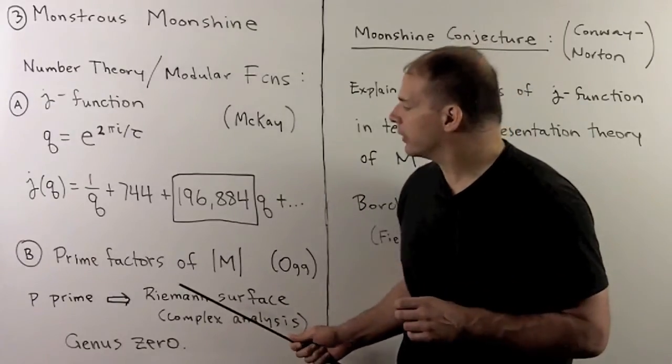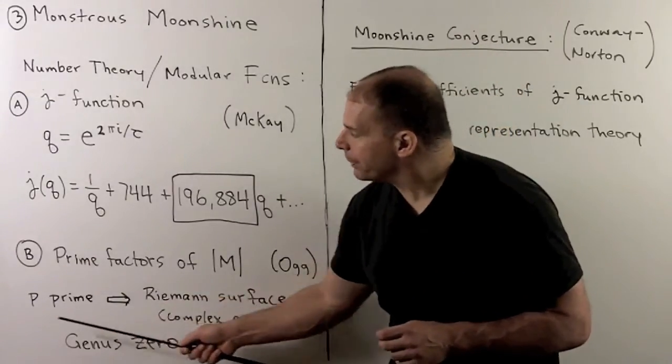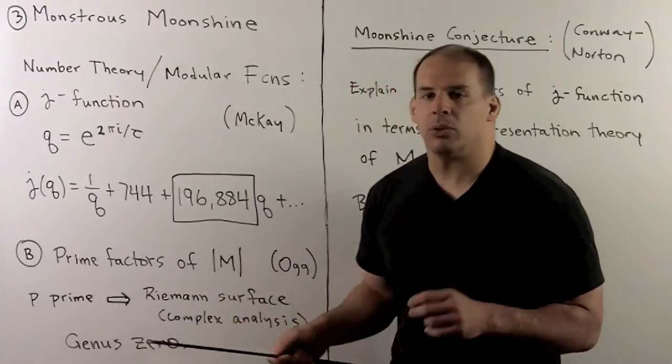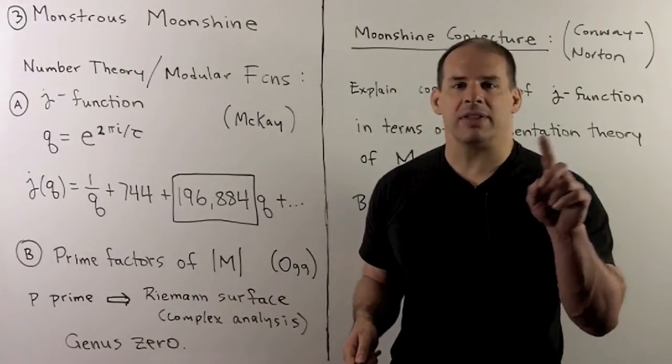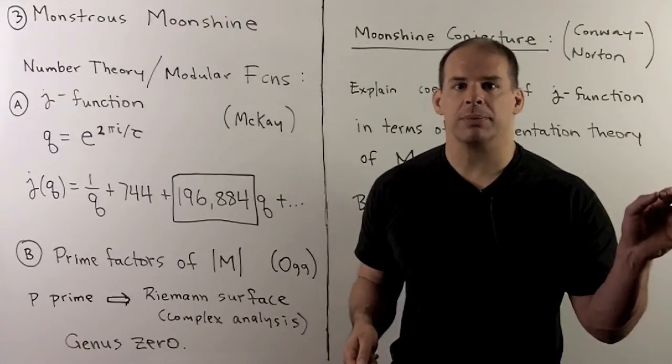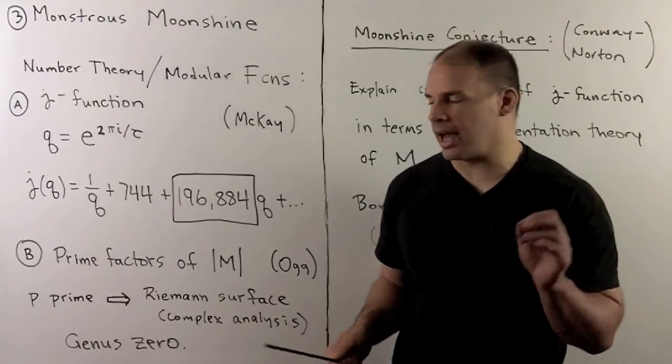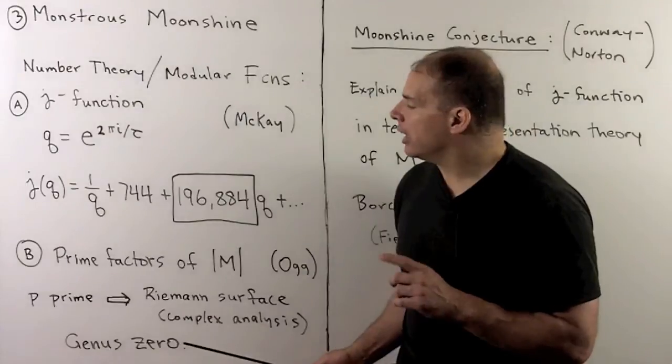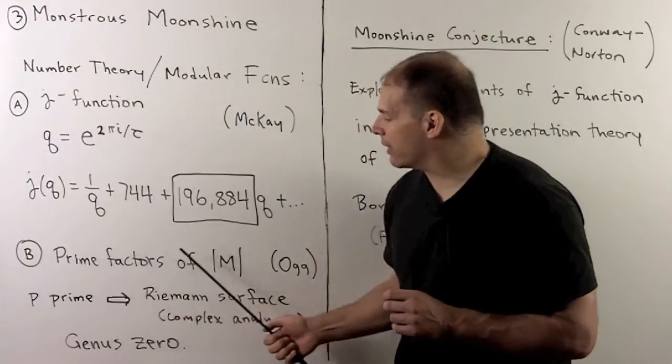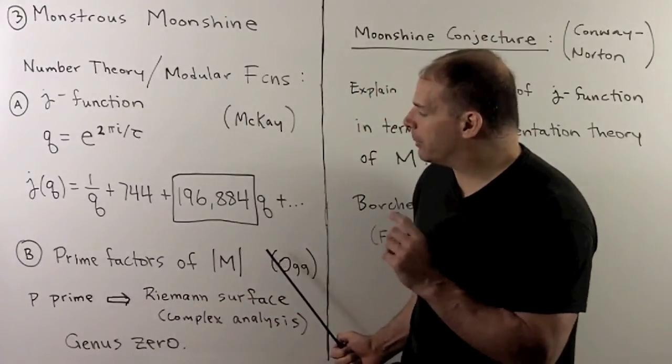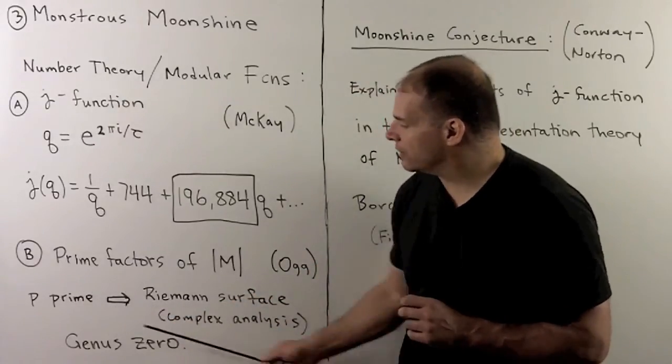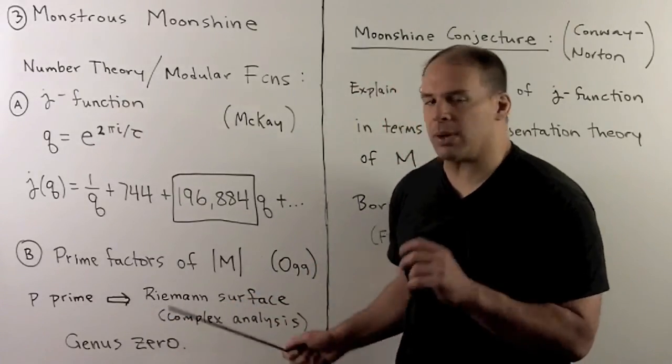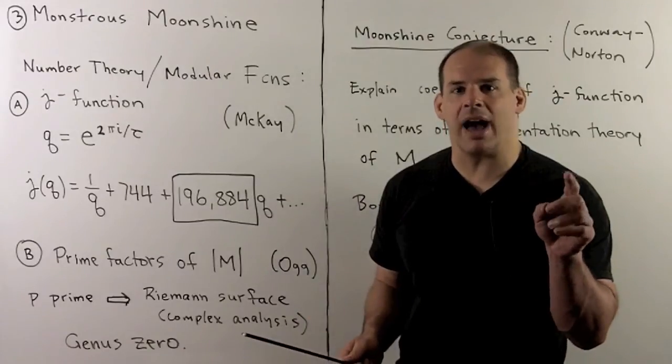Another connection. In number theory, for each prime, we have a mechanism that assigns each prime to a group. Then we can take that group and get a Riemann surface, which is going to be a gadget from complex analysis. It turns out that the prime factors of the monster group are to be precisely those primes that yield Riemann surfaces of genus zero. So that was another interesting connection without an explanation.